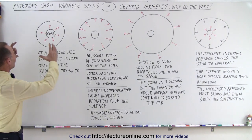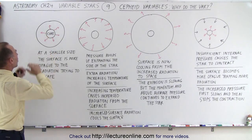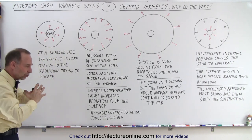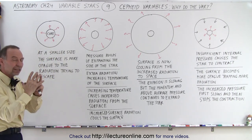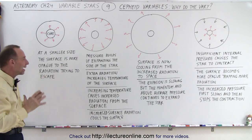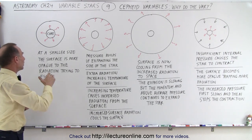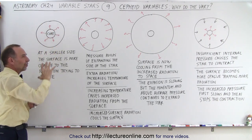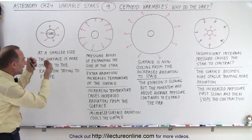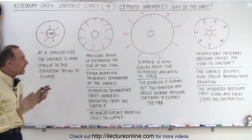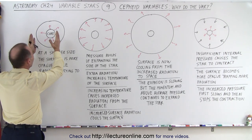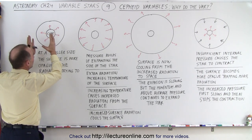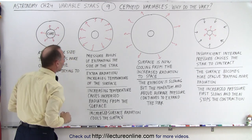Here we have the Cepheid variable at its small size. The core is putting out an enormous amount of energy and radiation, causing pressure to build up inside the star. When the star is at its smallest, the surface tends to be more opaque to radiation getting out, so radiation is stored up inside the star, building up pressure, and that buildup of pressure begins to expand the star.